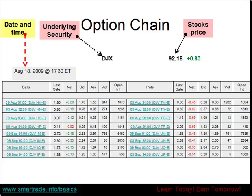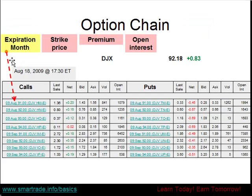The current price the Dow Jones Industrial Index is selling for is $92.18. And then we have the date and time for this quote. Now each platform you will use will let you know how often they update this information. Obviously, the more often the information is updated, the more accurate the quotes will be. In the next slide, I will begin showing you what the numbers in the graph represent. The expiration months are August and September of 2009.